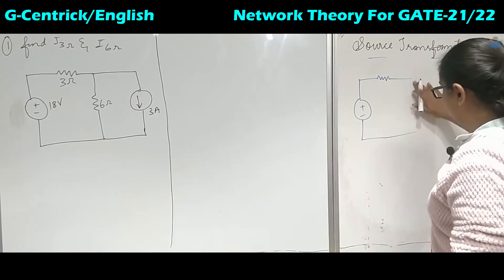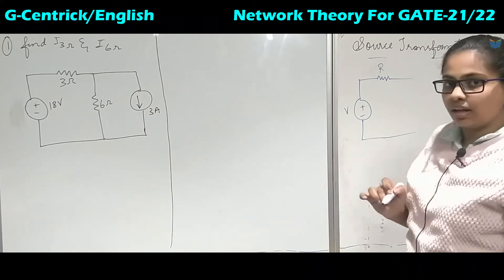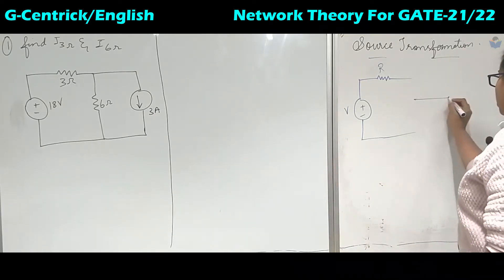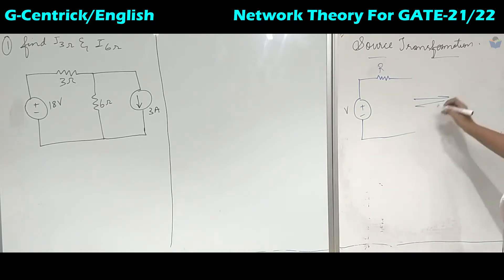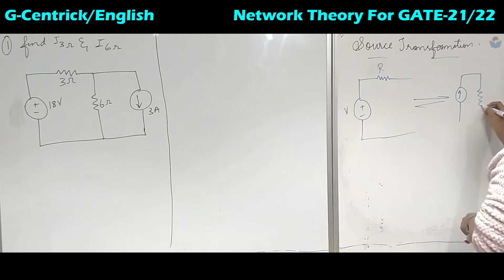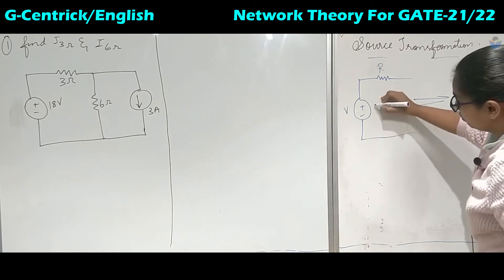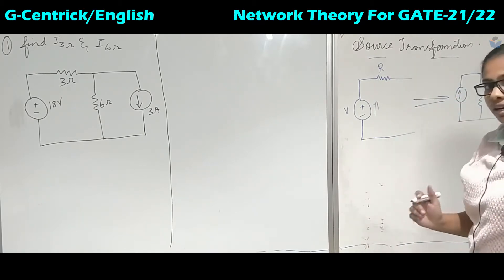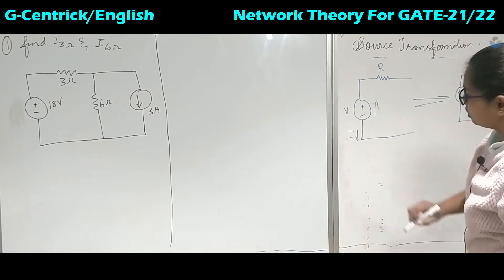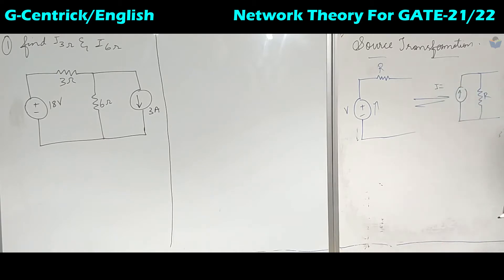If you have a practical voltage source V connected with a resistor in series, and you want to convert it into a practical current source, the resistor will be connected in parallel. The direction of the current source arrow depends on polarity: if the positive terminal is upwards, the current source arrow will point upward; if minus is up and plus is down, the current source arrow points downward. The value of R remains the same, and the value of I is solved using Ohm's law: I = V / R.